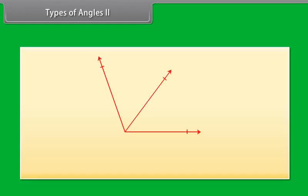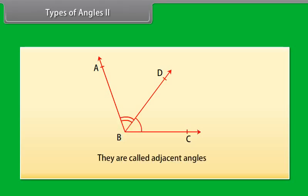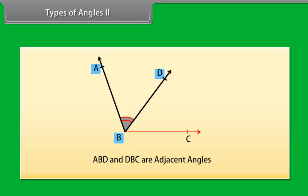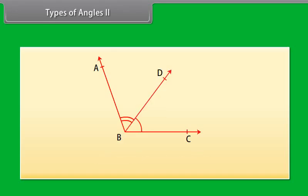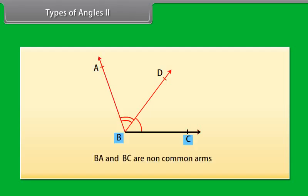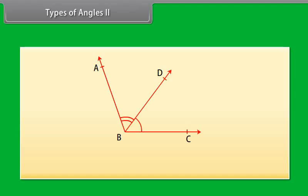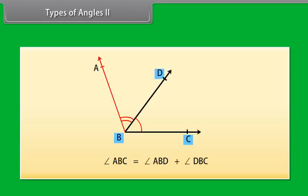Another question for you: what do we call those angles which have a common vertex, a common arm, and their non-common arms are on different sides of the common arm? They are called adjacent angles. Here, angle ABD and angle DBC are adjacent angles. Ray BD is their common arm and point B is their common vertex. Ray BA and Ray BC are non-common arms. When two angles are adjacent, their sum is always equal to the angle formed by the two non-common arms. So we can write: angle ABC is equal to angle ABD plus angle DBC.